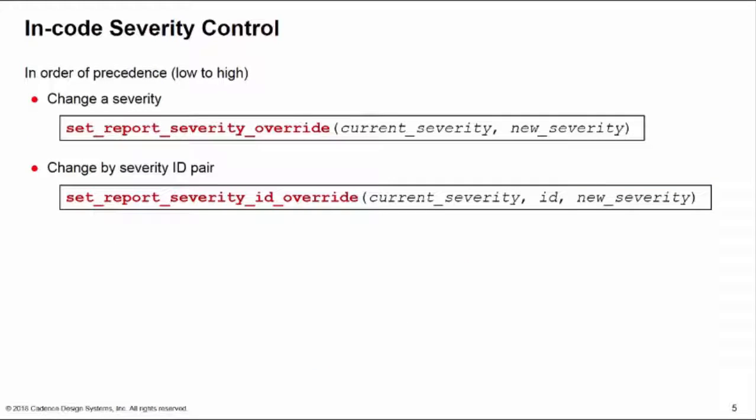Let's have a look at the code severity control options first. There's two methods here, listed in order of precedence from low to high. We have set_report_severity_override which changes all reports of a given current severity to be new severity. You can also change the severity by a combination of current severity and report ID using set_report_severity_id_override to change those reports to a new severity.